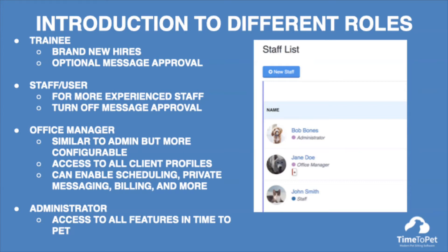The office manager role can be customized to only have access to certain things that staff and trainees can never access. For example, office managers have access to all client profiles and the company calendar. Optionally, office manager permissions can be enabled to use the private messaging feature with clients, manage scheduling, charge client cards, bulk email clients, or generate reports and manage staff. The administrator role has access to your entire Time2Pet account. Our help article on staff member access gives an overview of what a staff or trainee has access to inside of their account. This is called the staff member access help article.